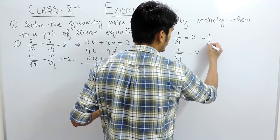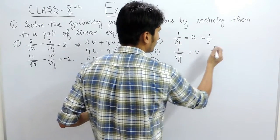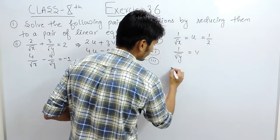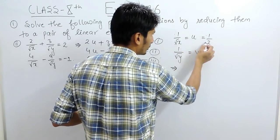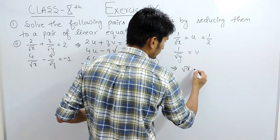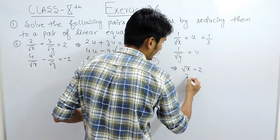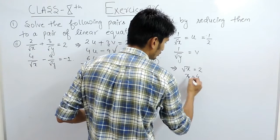And if you put here the value of u as 1 by 2, so the value of x must be equals to... so 1 upon root x is basically 1 upon 2, so root x must be equals to 2 and the value of x should be equals to 4.